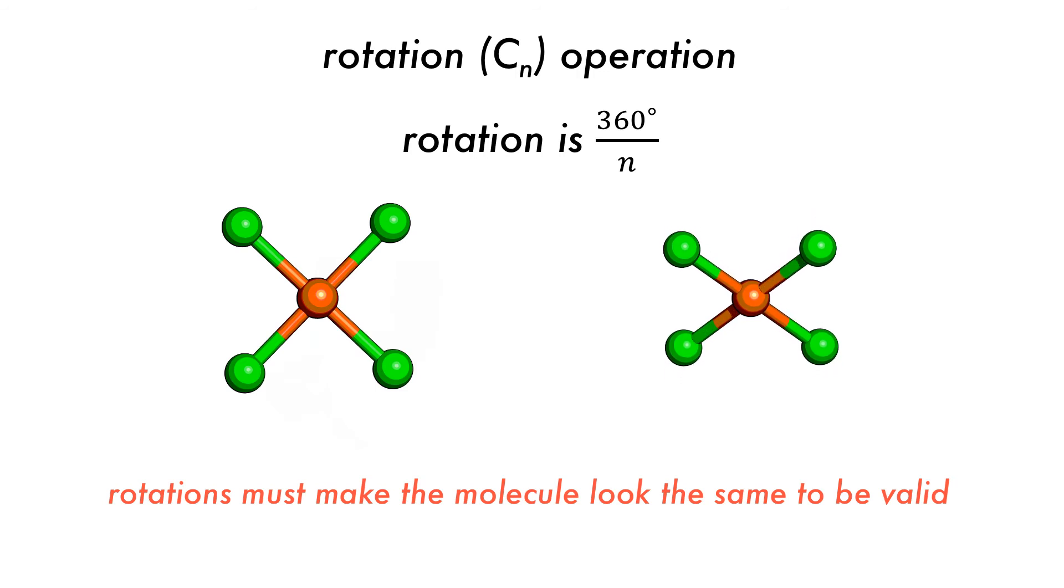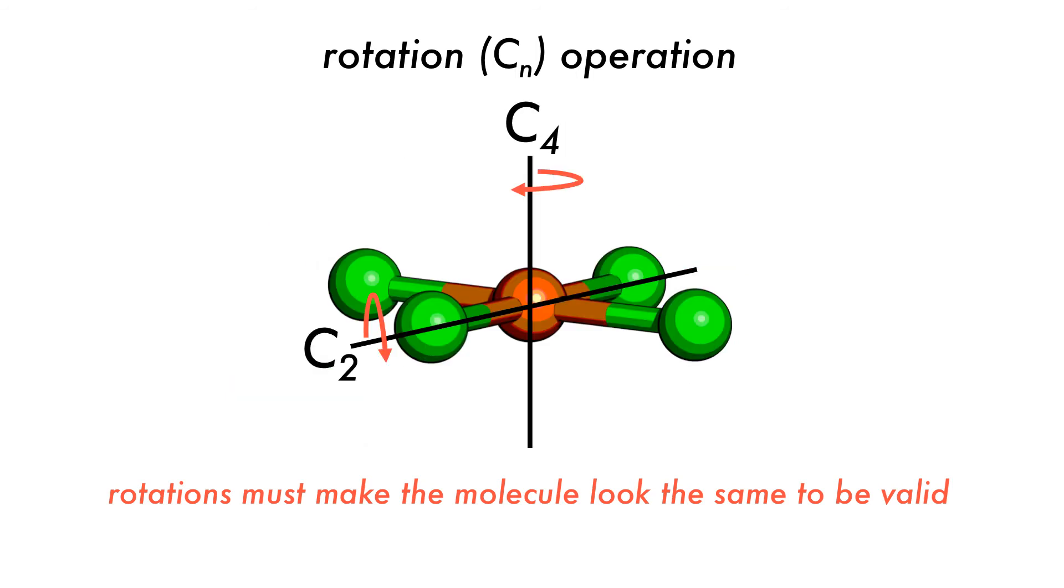There can be more than one axis of rotation in a molecule, and this square planar molecule also has multiple C2 axes, such as the one shown. If a molecule has two axes of rotation, such as here, then the one with the highest value of n is known as the principal axis.